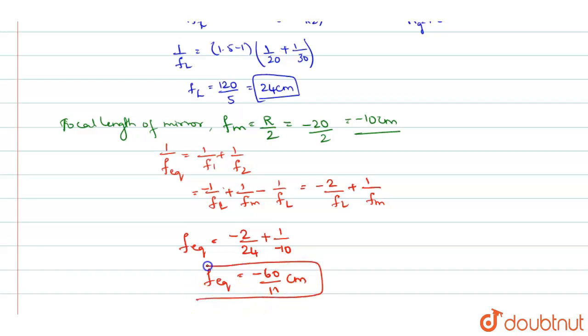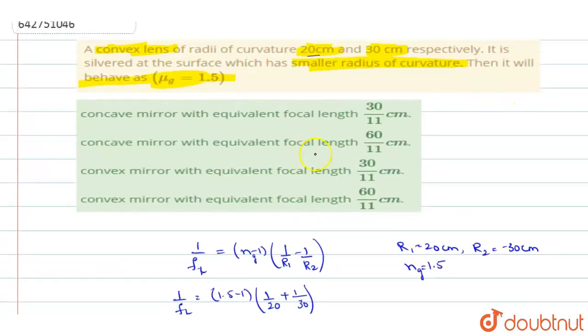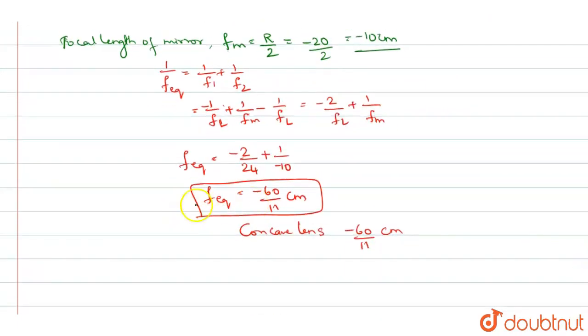So the combination focal length you will get like this, which means that when you see to this focal length value, you can say that you have a minus sign over here. So since it has a minus sign, it behaves like a concave lens and the concave lens will be having a focal length of minus 60 by 11 centimeter. Now see to the choices - you should have a concave lens. It should behave like a concave lens with equivalent focal length of minus 60 by 11.